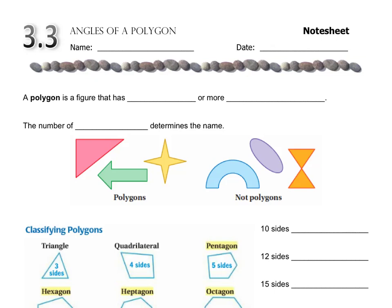Today, we're going to talk about the angles of a polygon. A polygon is a figure that has three or more sides, and the number of sides determines the name.